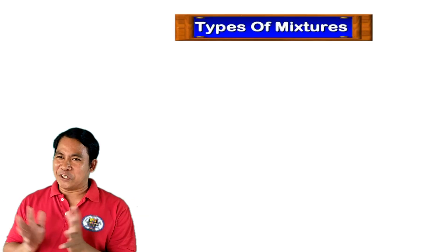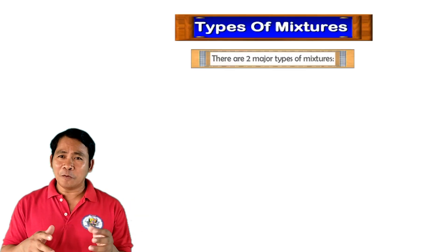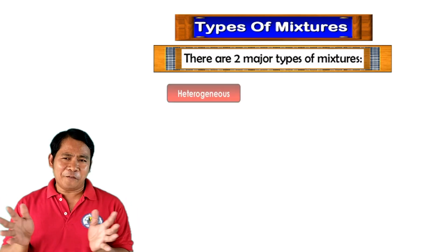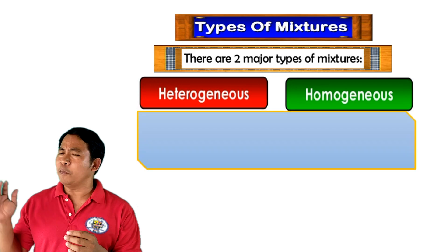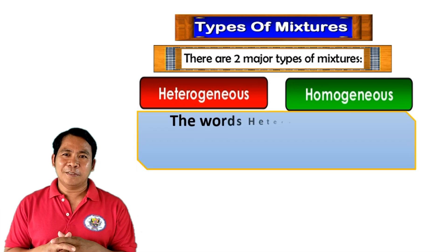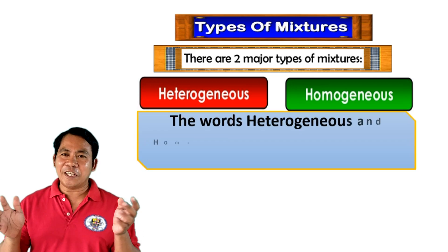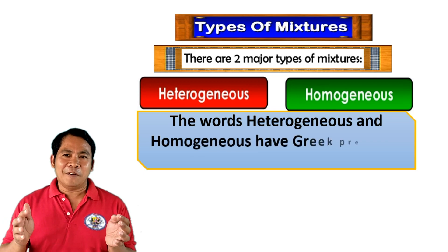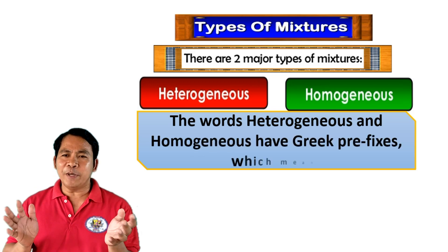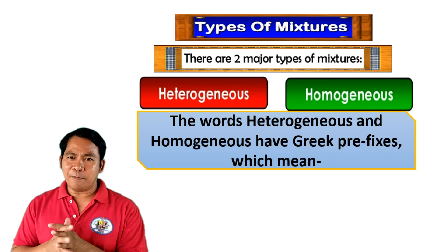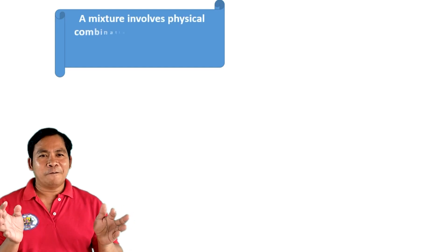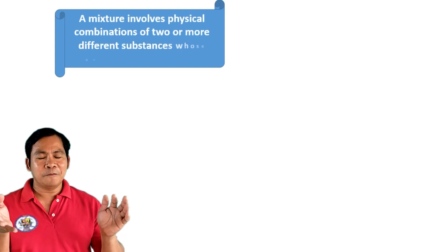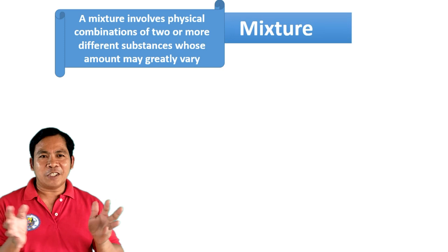There are two different types of mixtures: heterogeneous and homogeneous. The words have Latin prefixes — 'homo' means same and 'hetero' means different. A mixture involves the physical combination of two or more different substances.